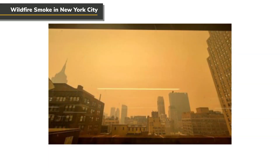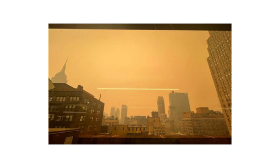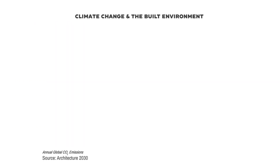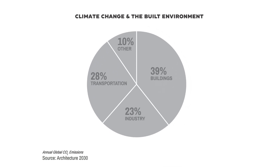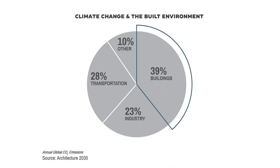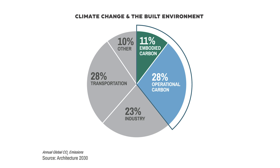Globally we're seeing the effects of climate change and human-induced climate effects — hotter temperatures, sea level rise, varied precipitation patterns, and increasing wildfires. Buildings contribute a lot to global greenhouse gas emissions — about 40 percent annually. Of that 40 percent, about two thirds is operational carbon and about a third is embodied carbon.